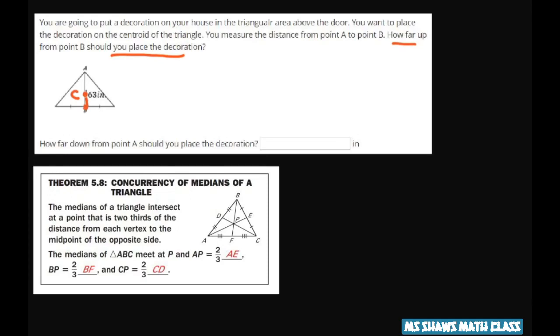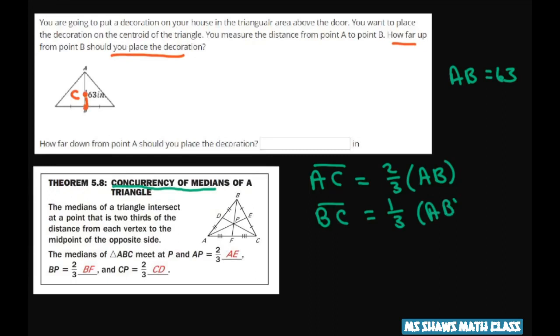We know that AB equals 63. So AC, according to our concurrency of medians theorem, is going to be two-thirds of AB. Therefore, BC is one-third of AB. So to go from the midpoint up this way, this is the one-third part.